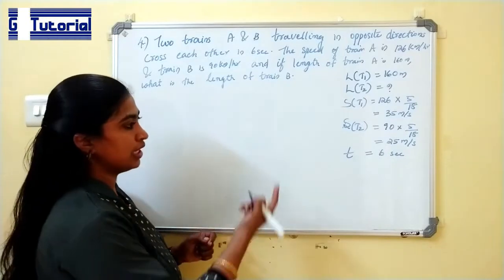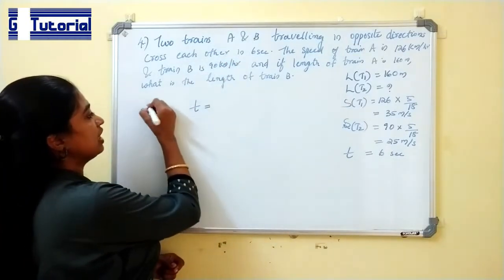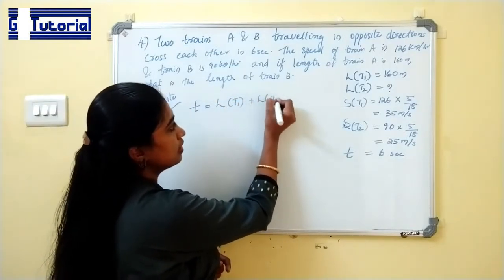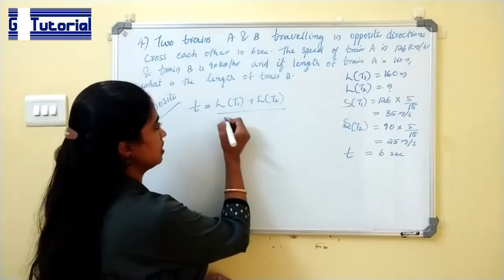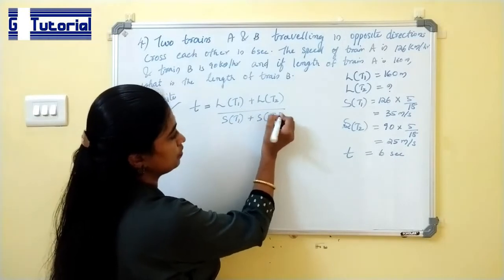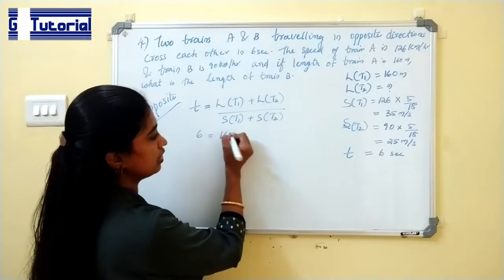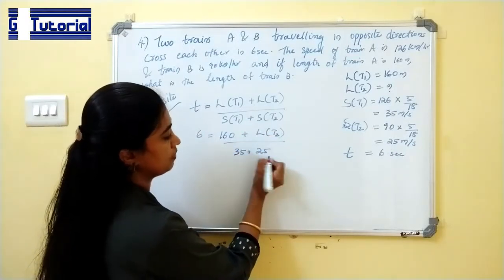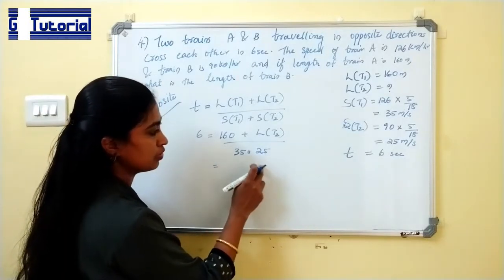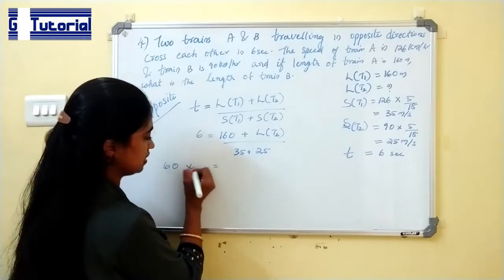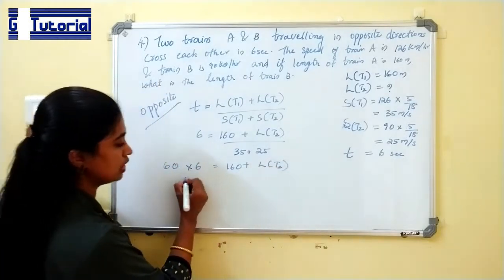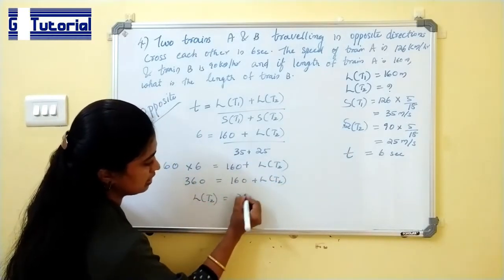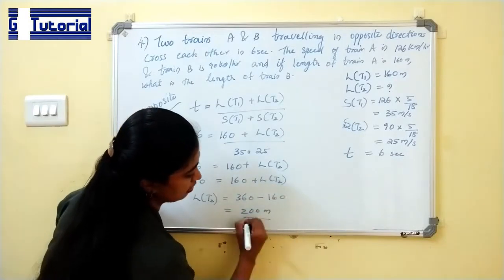When travelling in opposite directions, time taken to cross equals length of train 1 plus length of train 2 divided by the sum of speeds. So, 6 equals 160 plus length of train B divided by 35 plus 25. That is 60. So 60 × 6 = 360 equals 160 plus length of train B. Therefore, length of train B is 360 minus 160, which is 200 meters.